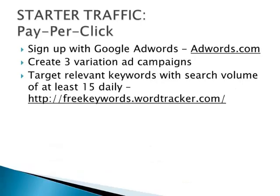Starter traffic method one: Pay Per Click. Sign up with Google AdWords at adwords.com, create three variation ad campaigns, and target relevant keywords with a search volume of at least 15 daily using freekeywords.wordtracker.com. Pay-per-click is a popular choice because you can get traffic almost right away once your ad is live on Google — the world's leading search engine — in as little as five minutes.